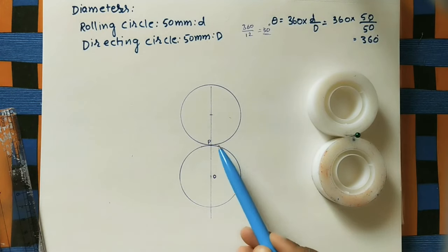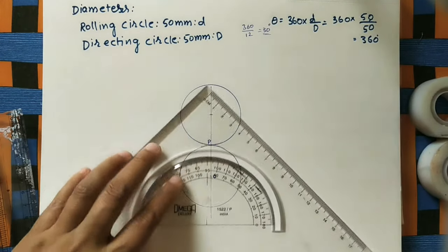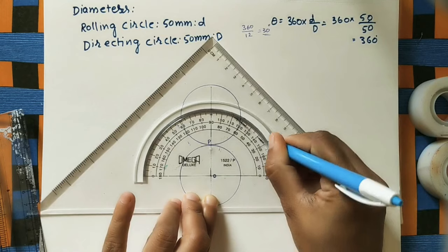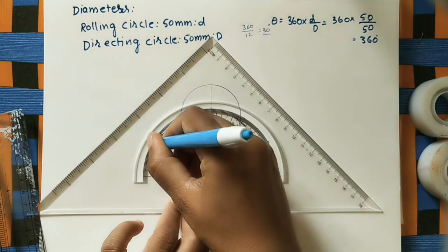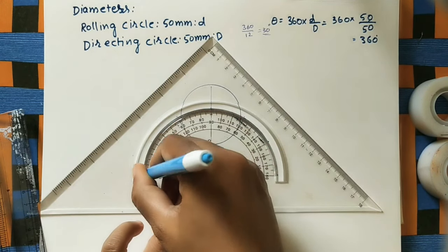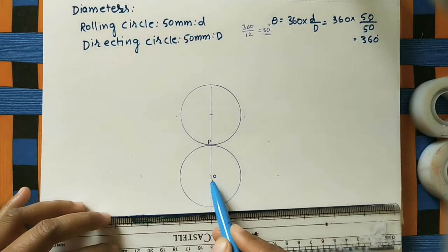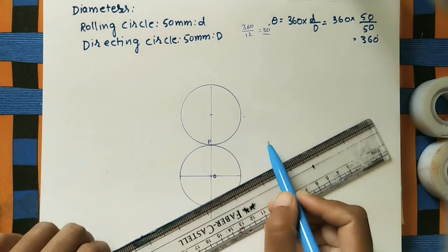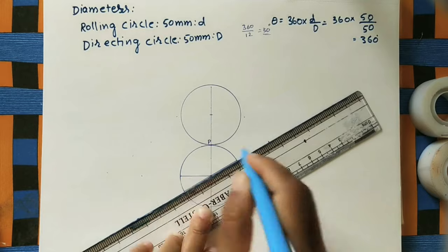After drawing the two circles with common point P, divide the rolling circle into 12 equal divisions. Since the angle at the center is 360 degrees, divide by 12 to get 30 degrees per division. Using a protractor, mark 0, 30, 60, 90, 120, 150, and 180 degrees. Join all these points to the center and extend the lines. Do the lines within the circle and extend them to the other side as well, since the circle is symmetrical about its diameter.